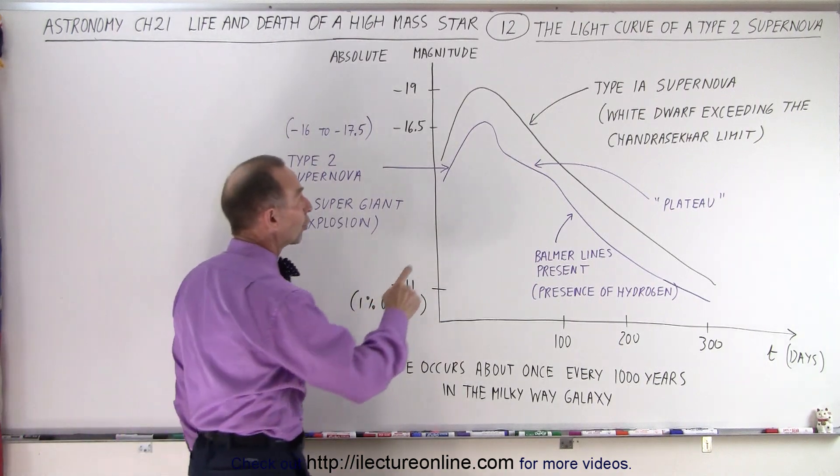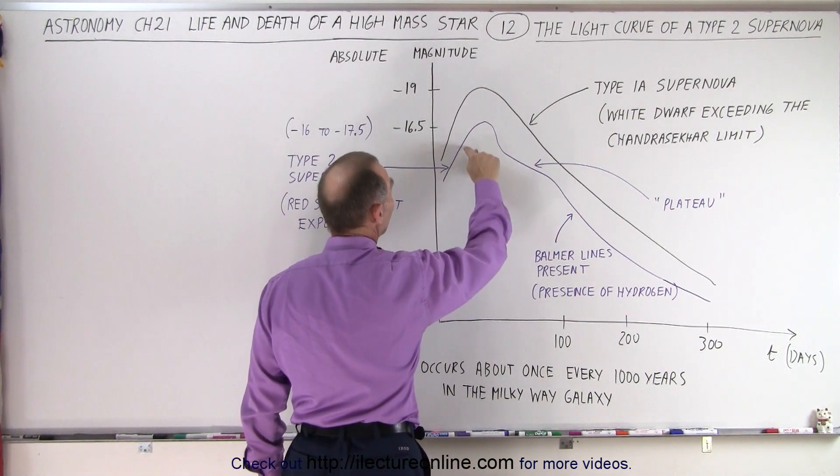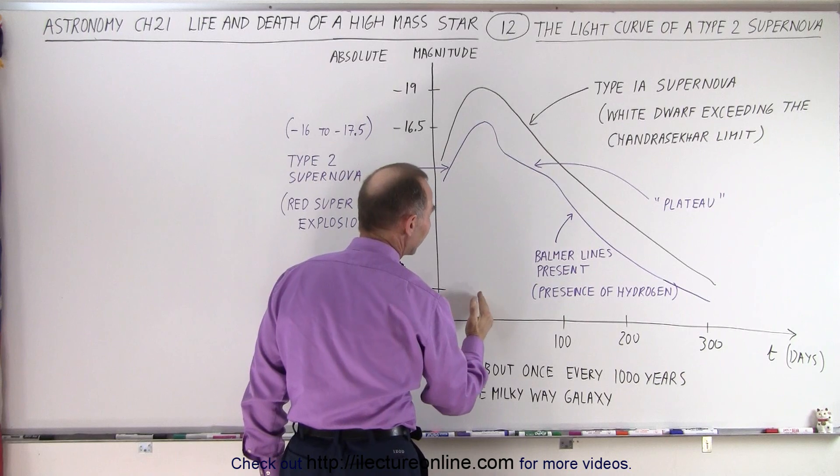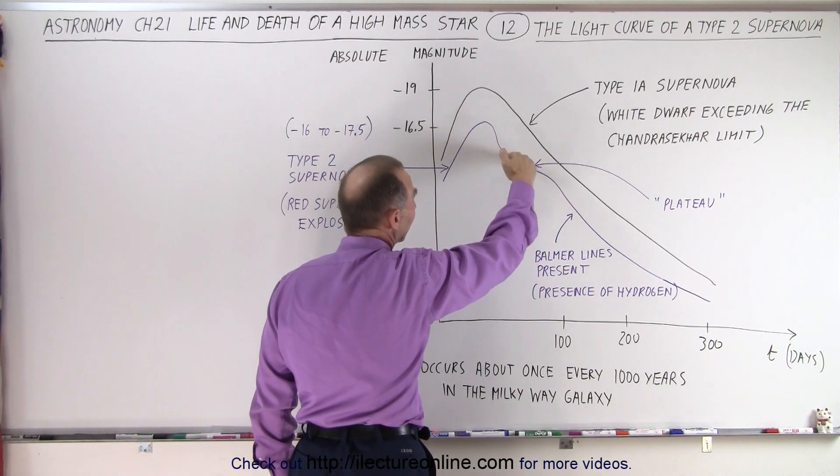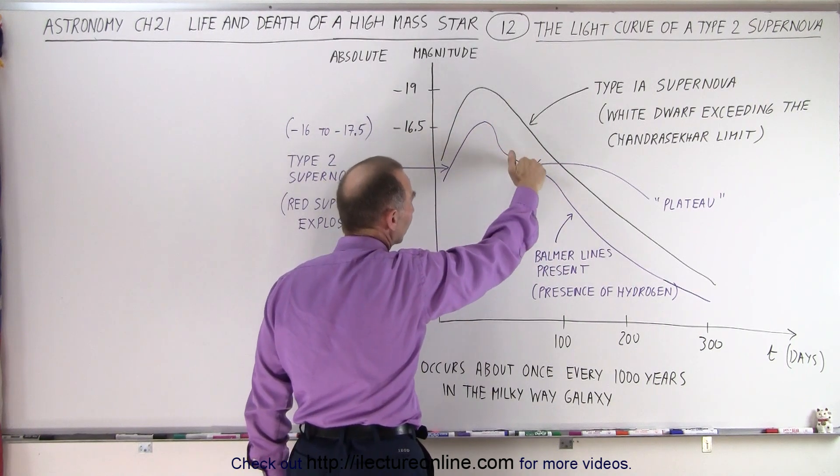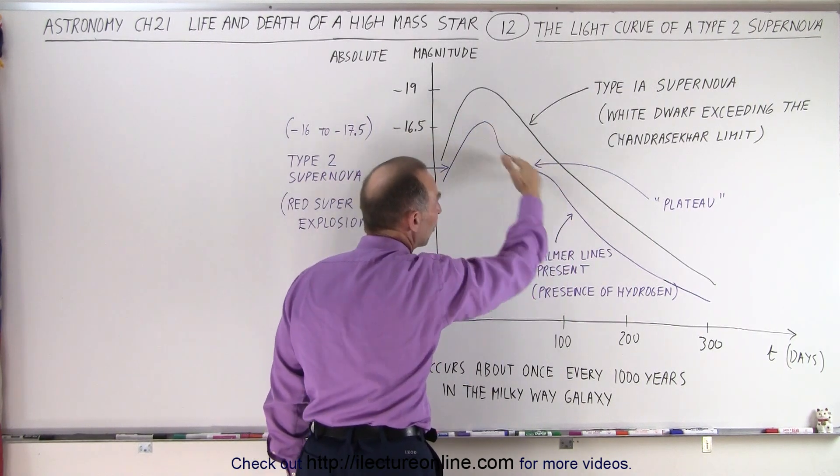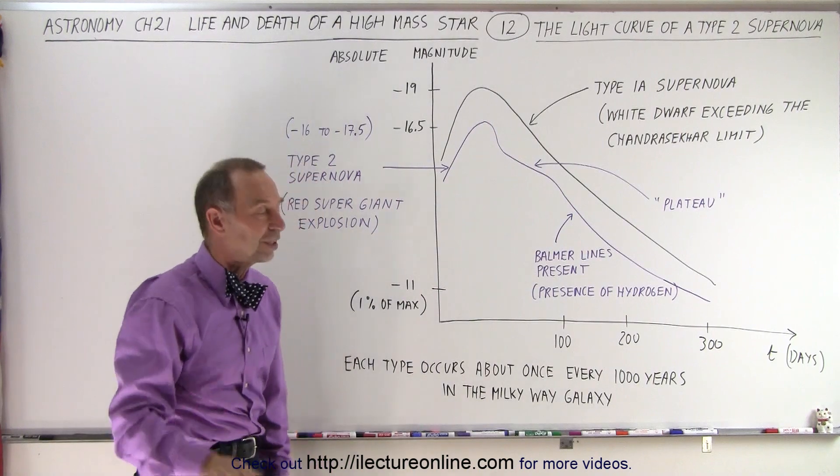But you can see that there's a difference in the curves. So first it reaches a maximum brightness in a matter of a few days, and then it begins to decrease in brightness. Notice that we have a kind of a strange slope where it's steep, not so steep, and steeper again. That's very unique for a Type 2 that we don't see in a Type 1.